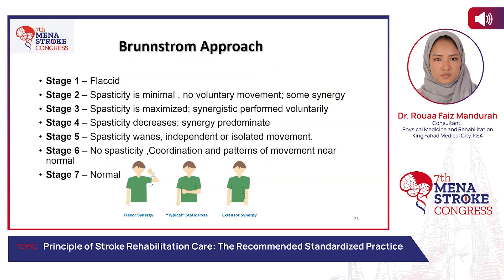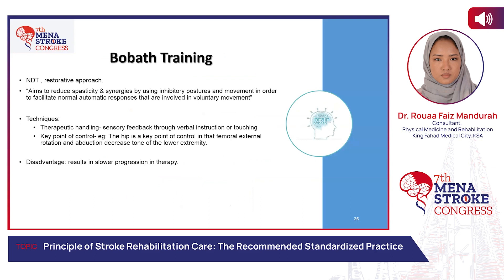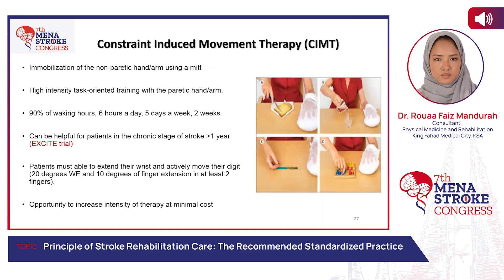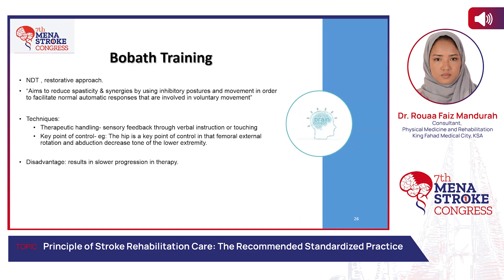The Brunnstrom approach has seven stages, from flaccid to normal, with spasticity developing between stages two and five, then stage six where there is no spasticity or coordination issues, and eventually normal. In Bobath training — one of the neurodevelopmental techniques for the restorative approach — the therapist looks at the patient's postural control, movement patterns, abnormal tone, and muscle weakness, then tries to correct them, with strong emphasis on not reinforcing wrong movement patterns. However, the disadvantage is it results in a slower progression in therapy.